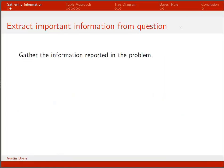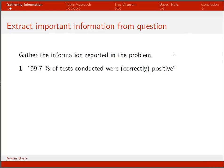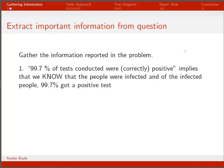After we read the question we want to extract the information and put it in a useful format. The first thing it tells us is that 99.7% of tests conducted were correctly positive. That implies we know the people were infected, and of those infected people 99.7% got a positive test. Translating this into math, the probability of a positive test given that you're infected is 0.997.